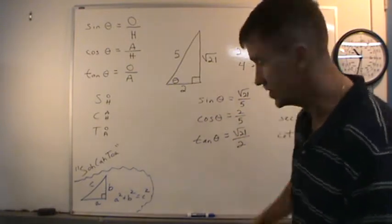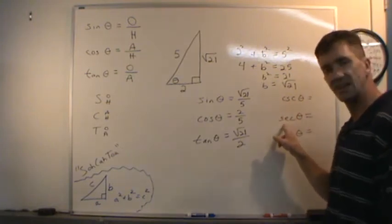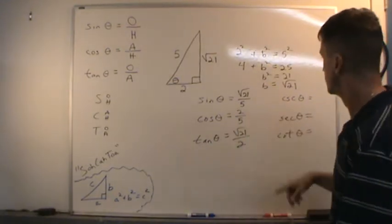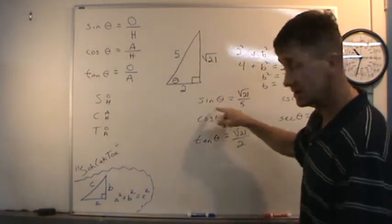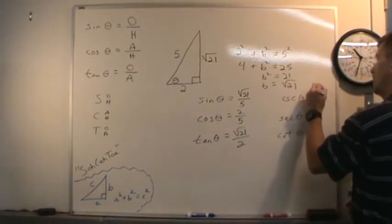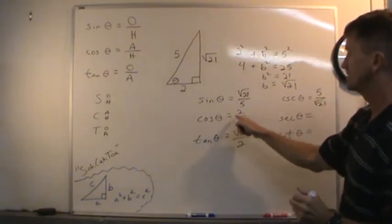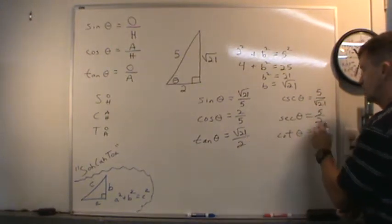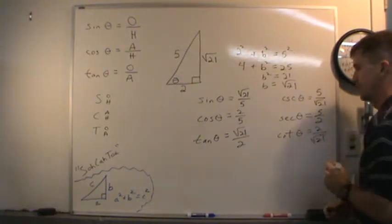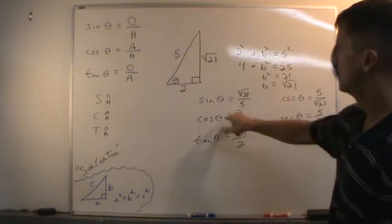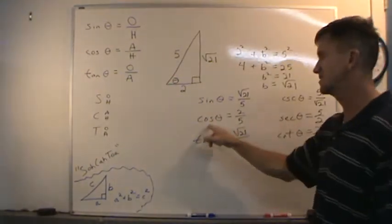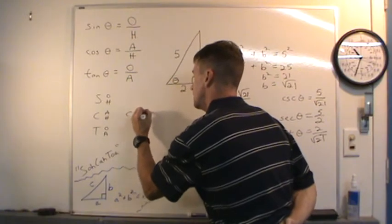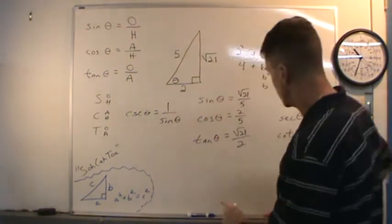What are the other three trig functions? Over here we have cosecant of theta, secant of theta, and cotangent of theta. These are the reciprocals of sine, cosine, and tangent. Cosecant theta, which is 1 over sine of theta, is the reciprocal: 5 over the square root of 21. Cosine theta is 2 over 5, so secant theta is 5 over 2. Cotangent theta is the reciprocal of tangent: 2 over the square root of 21. Cosecant of theta is sine theta's reciprocal buddy, and secant of theta is cosine theta's reciprocal buddy — we can think of that as a trig identity: cosecant of theta equals 1 over sine theta.